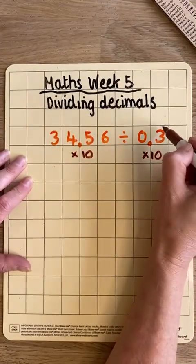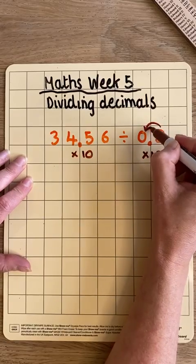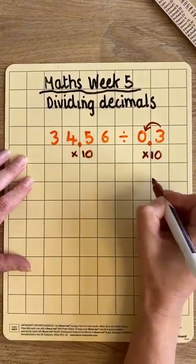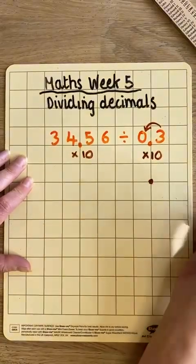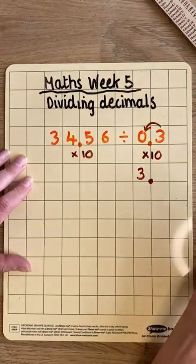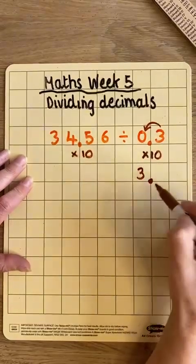When we times by 10, it means that each of our digits moves one column to the left, into a larger column. So here, if I put my decimal point in the same place, my 3 is now on the other side of my decimal point. And it's now a whole number because it's in the units or ones column.